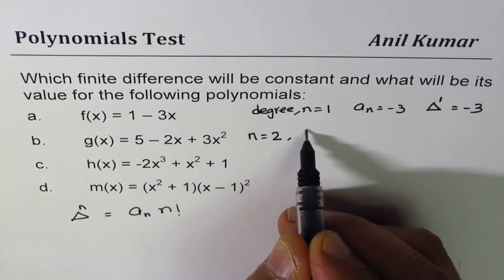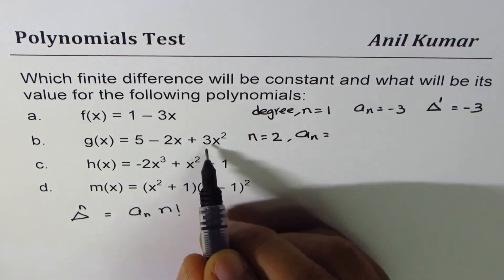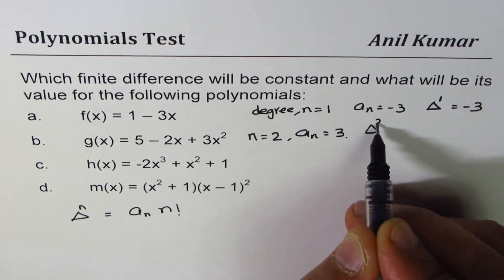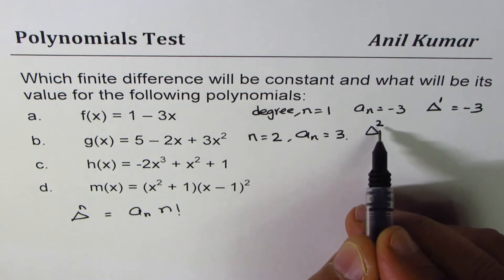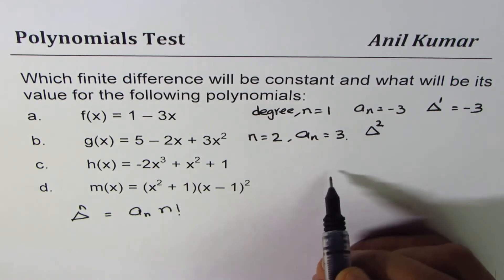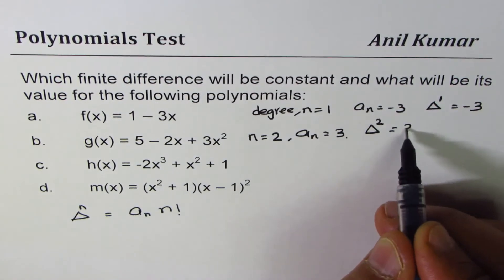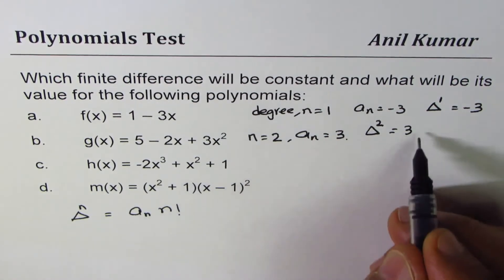What is the leading coefficient? a_n, the leading coefficient is 3. The second finite difference, which is going to be constant, that 2 here signifies second finite difference, is equal to a_n times n factorial, that means 3 times 2 factorial.